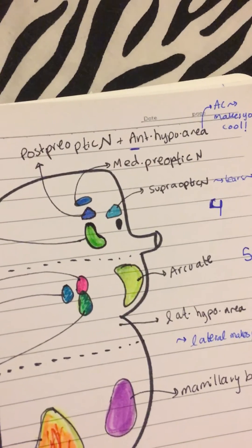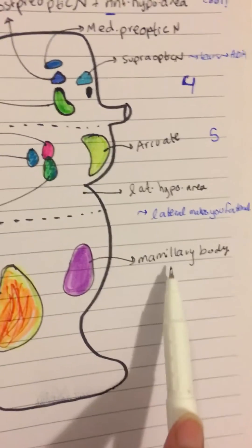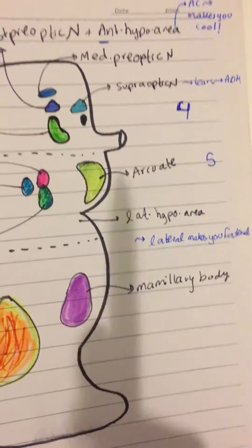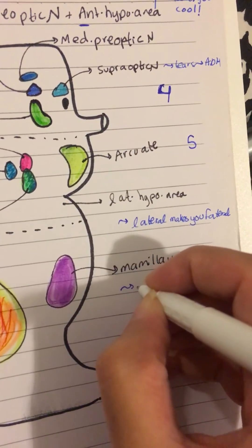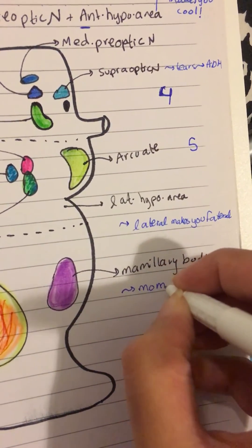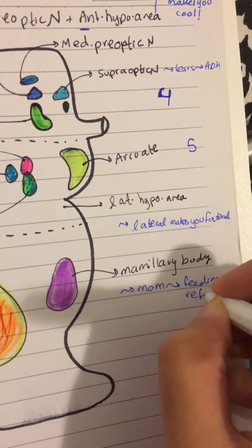And another trick, mammillary, mom likes, mom likes to feed people. So mammillary, you can go like mom, which is feeding reflexes.